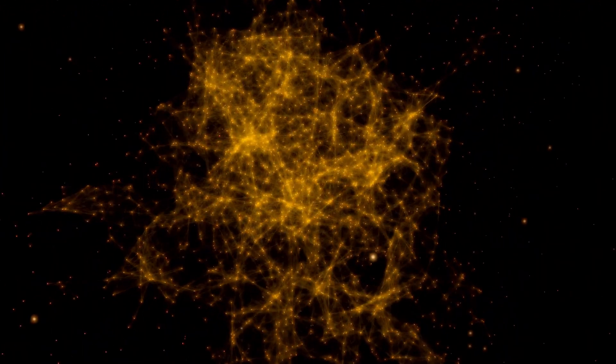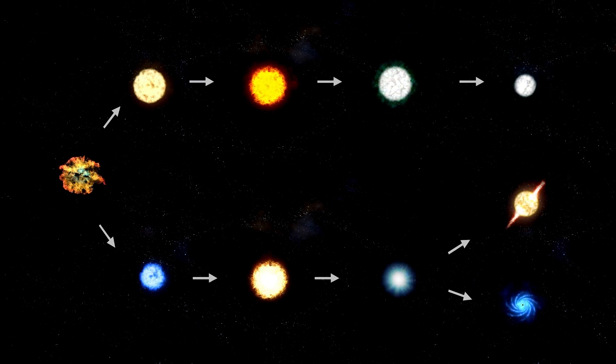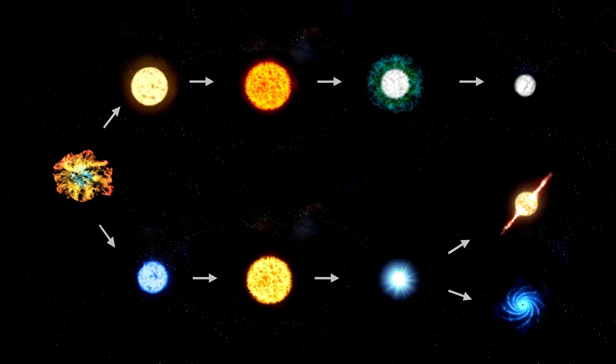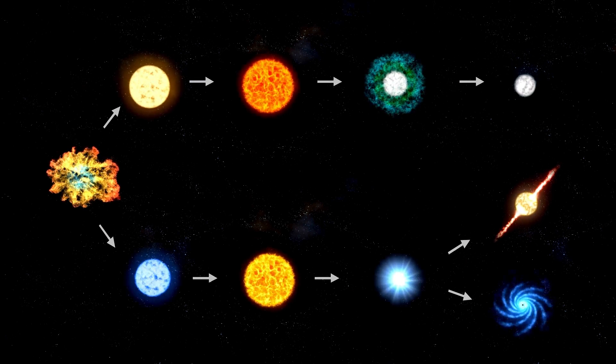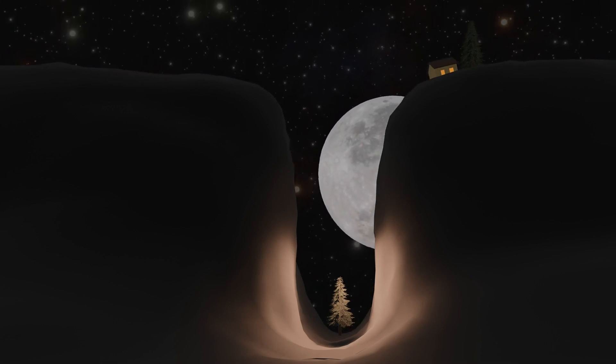Such is the case with Betelgeuse, one of the largest and most enigmatic stars in the sky. Recently, this colossal red supergiant has exhibited signs of alarming instability, drawing the intense scrutiny of scientists and stargazers alike.